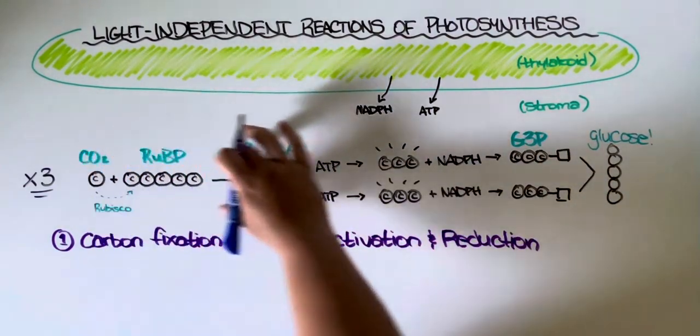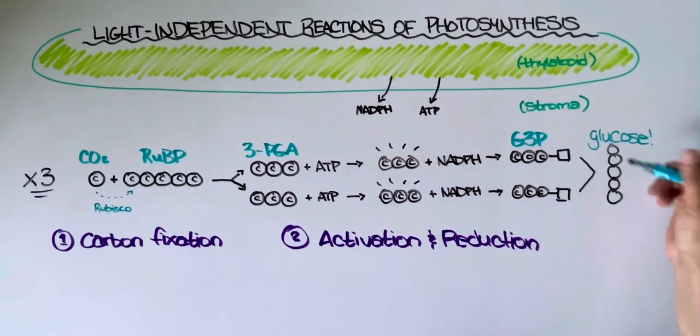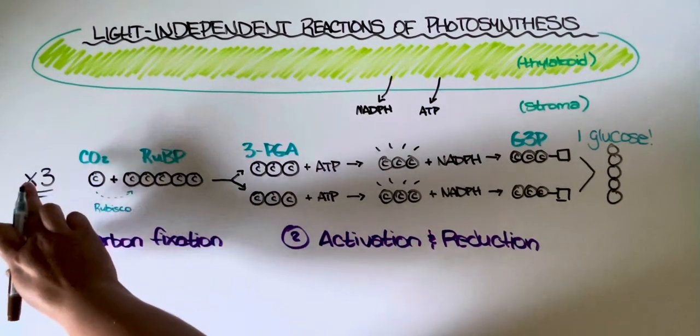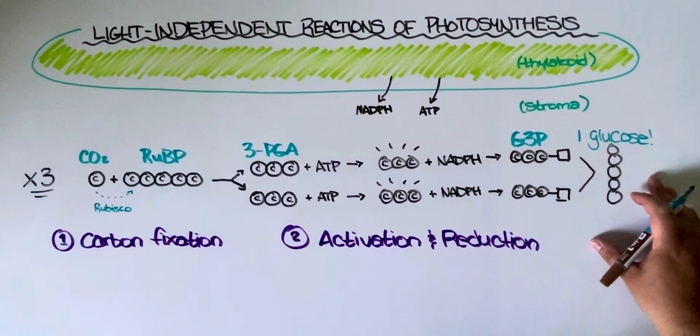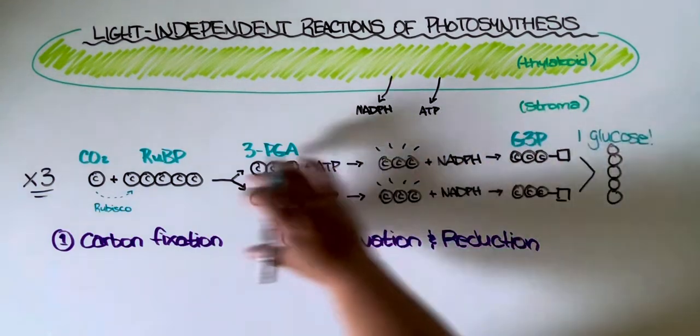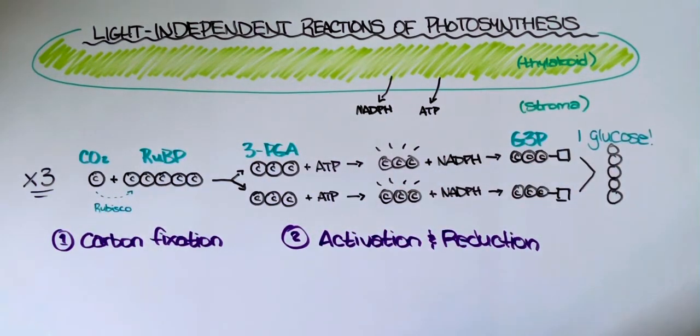Technically from this part of the reaction we should get one glucose molecule, and then since this is happening three times we should actually end up with three glucoses in total, because remember we're multiplying all of this by three. However, that's not what happens.